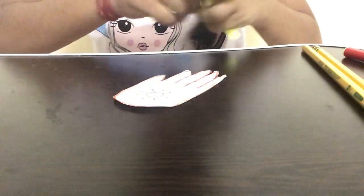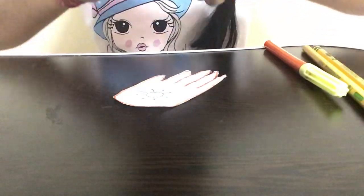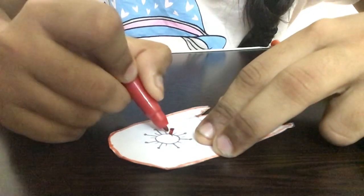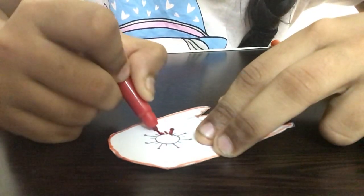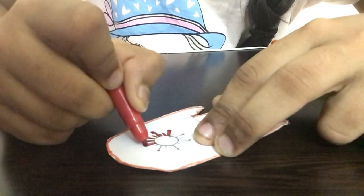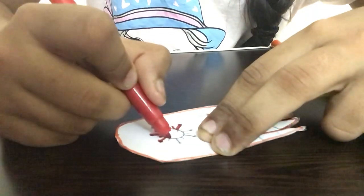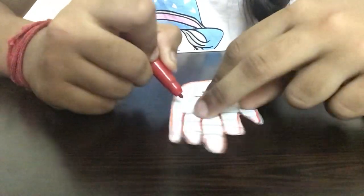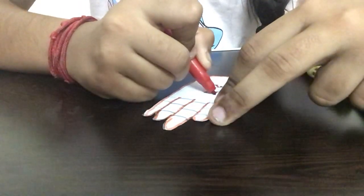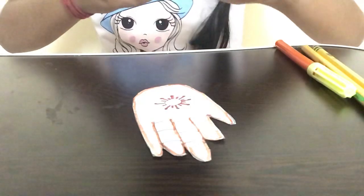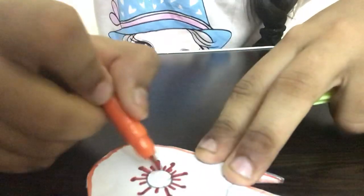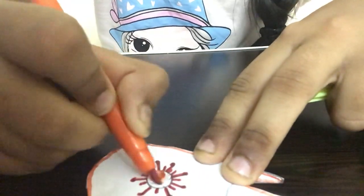The next step is that I'm taking a red marker and I'm coloring the outside part of the sun. So I'm coloring it in red like this.